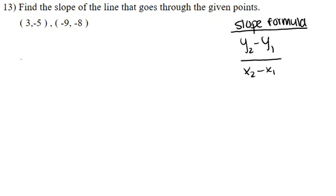So let's go ahead and label our points. This first set — 3 will be x1, negative 5 will be y1, negative 9 will be x2 since it is the second x value, and negative 8 is going to be y2. Now that we have those labeled, let's go ahead and plug in our points to our formula.